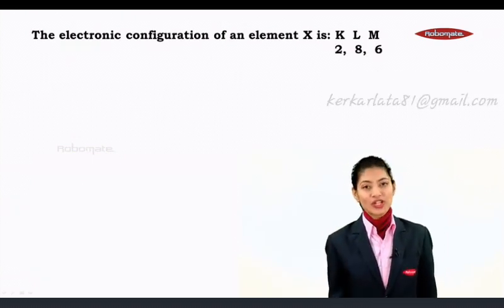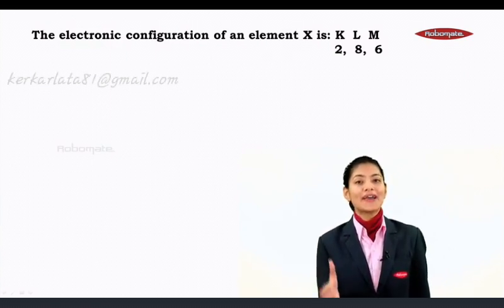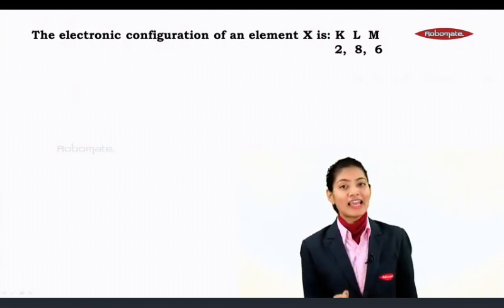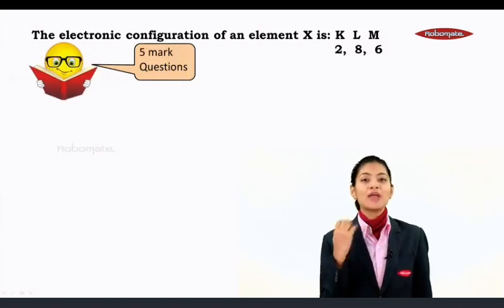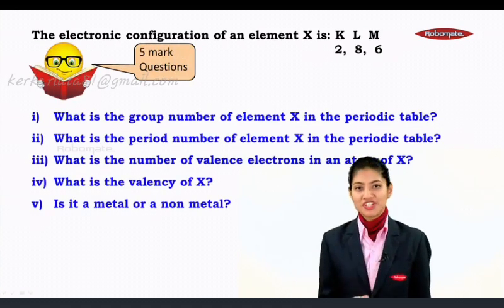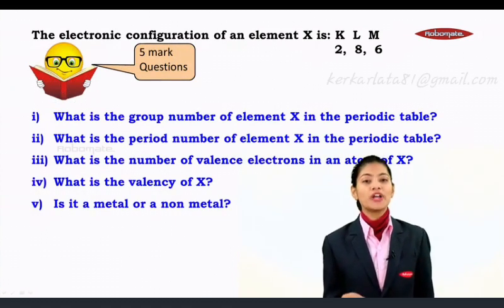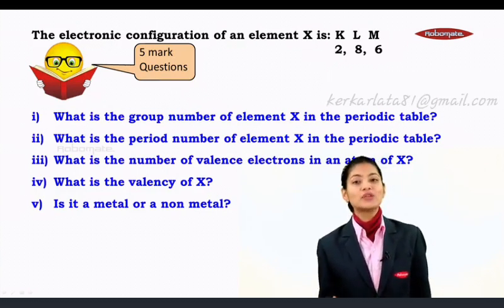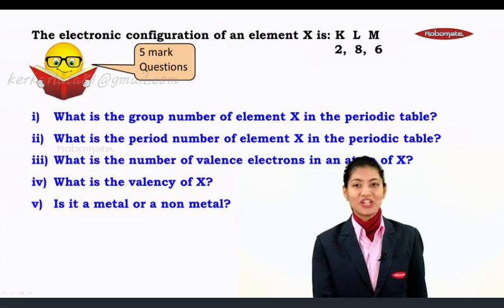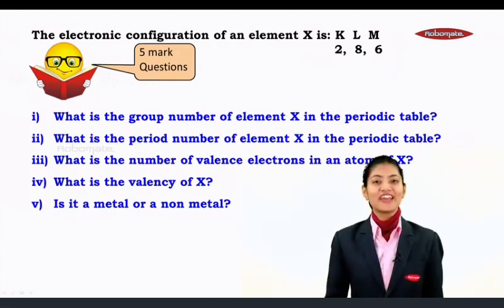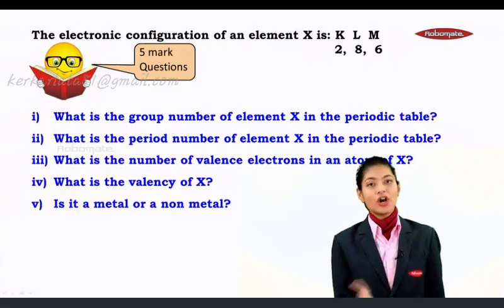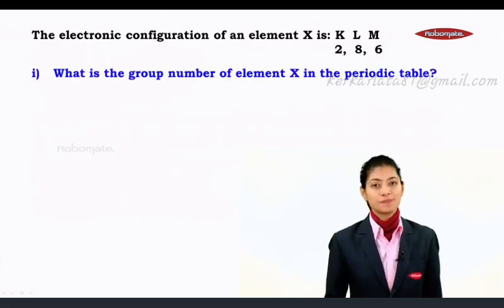Moving on to the second board question: the electronic configuration of an element is 2,8,6. This is a five-mark question with five sub-questions. First, what is the group number of element X? Second, what is the period number? Third, what is the number of valence electrons? Fourth, what is the valency of X? And finally, is it a metal or a non-metal? Let us tackle them one by one.